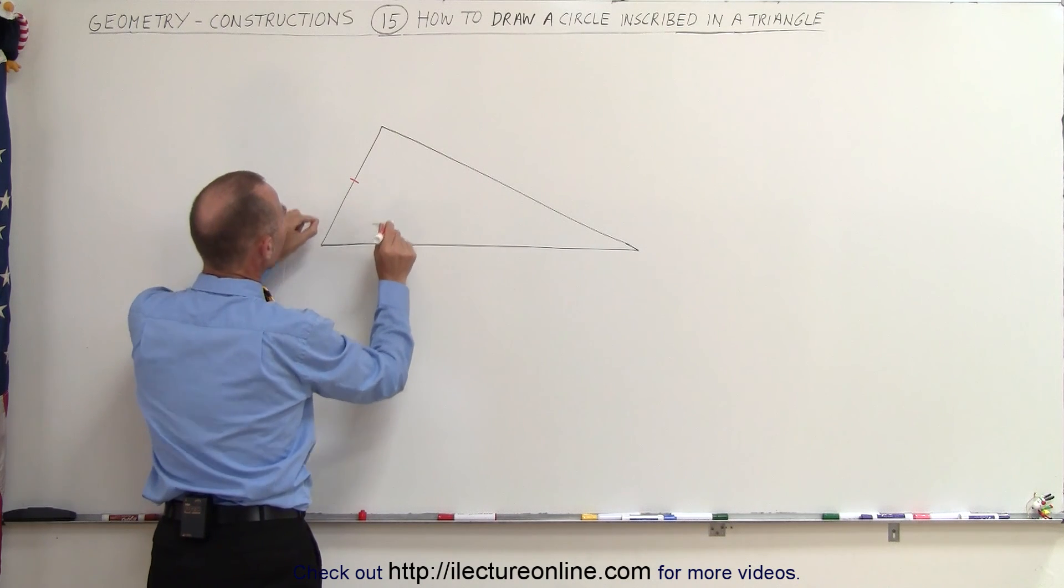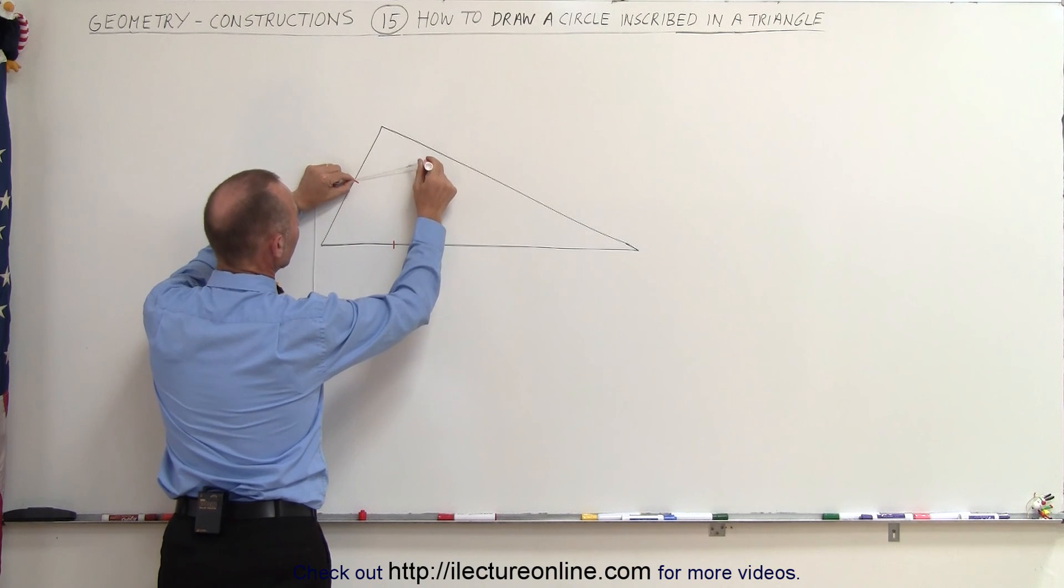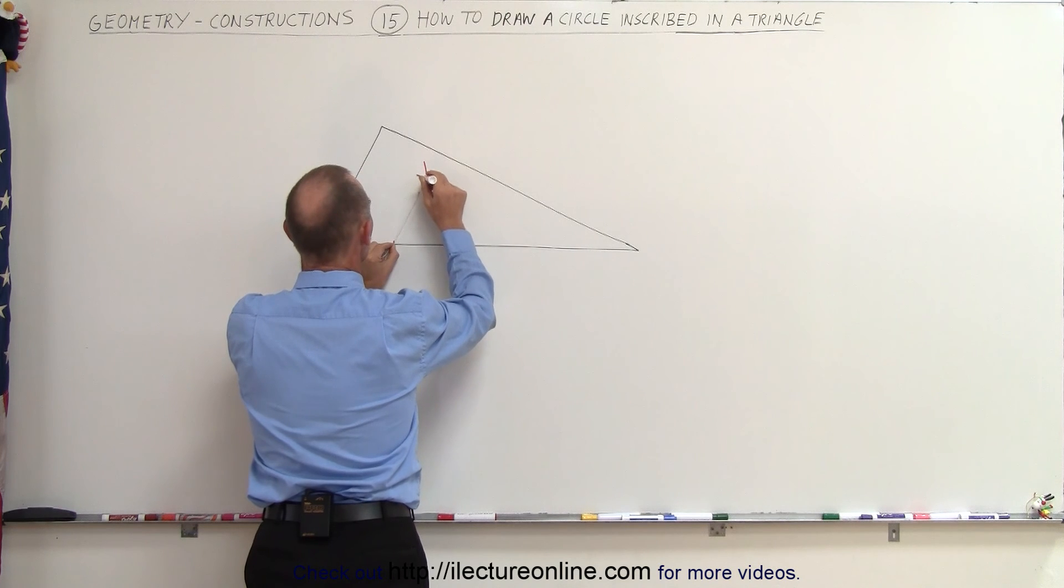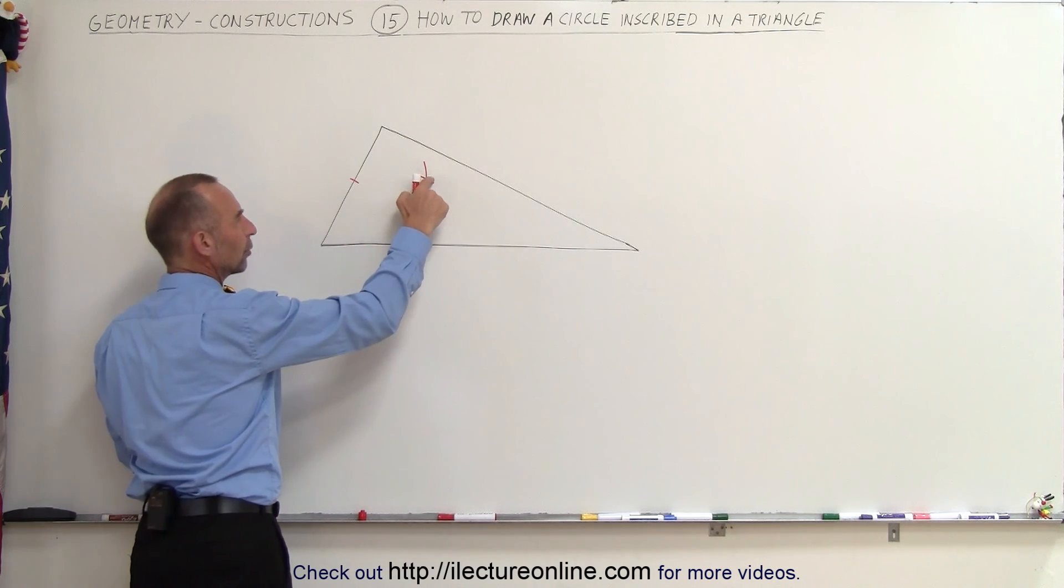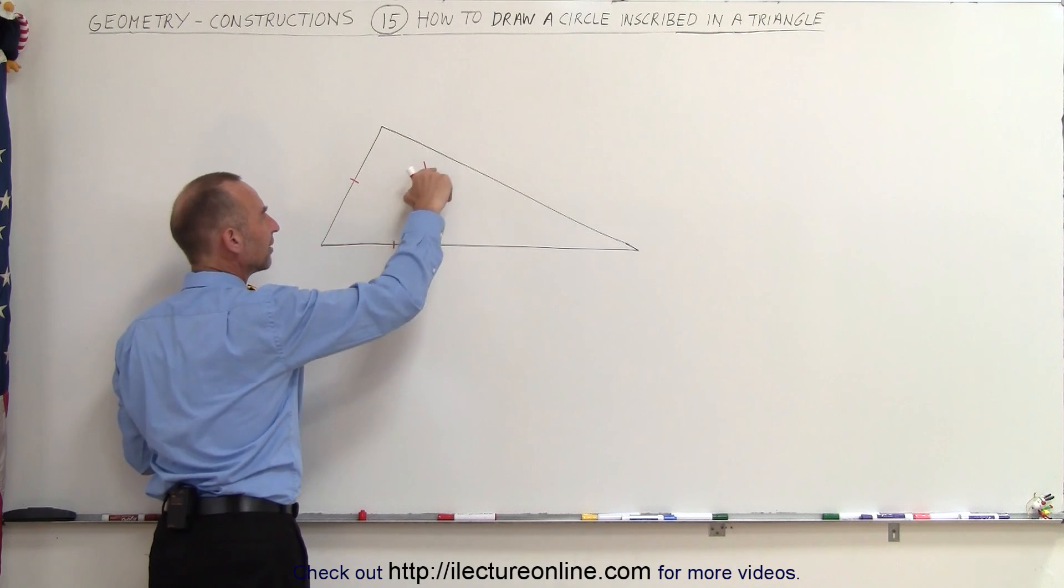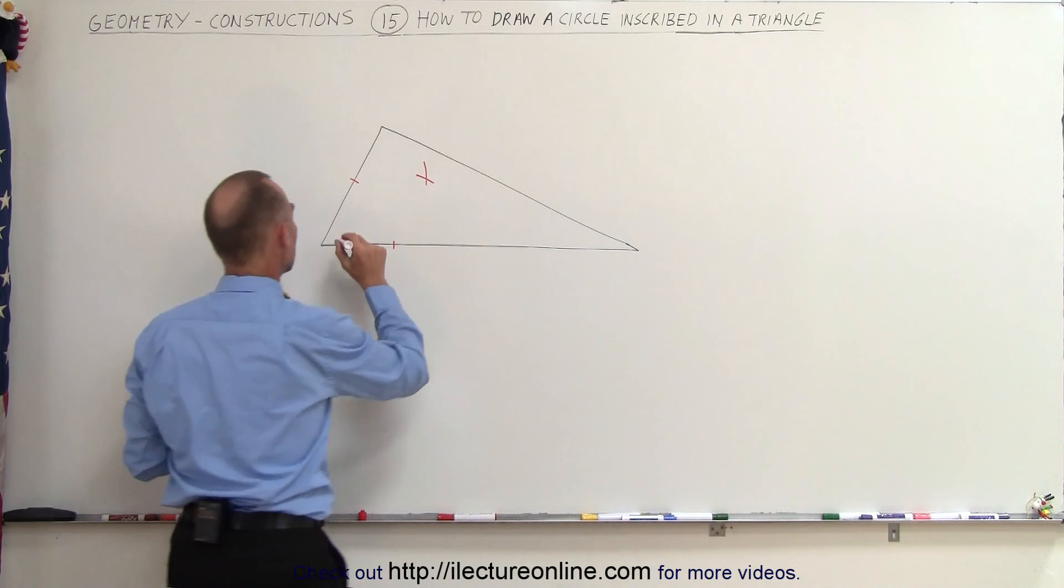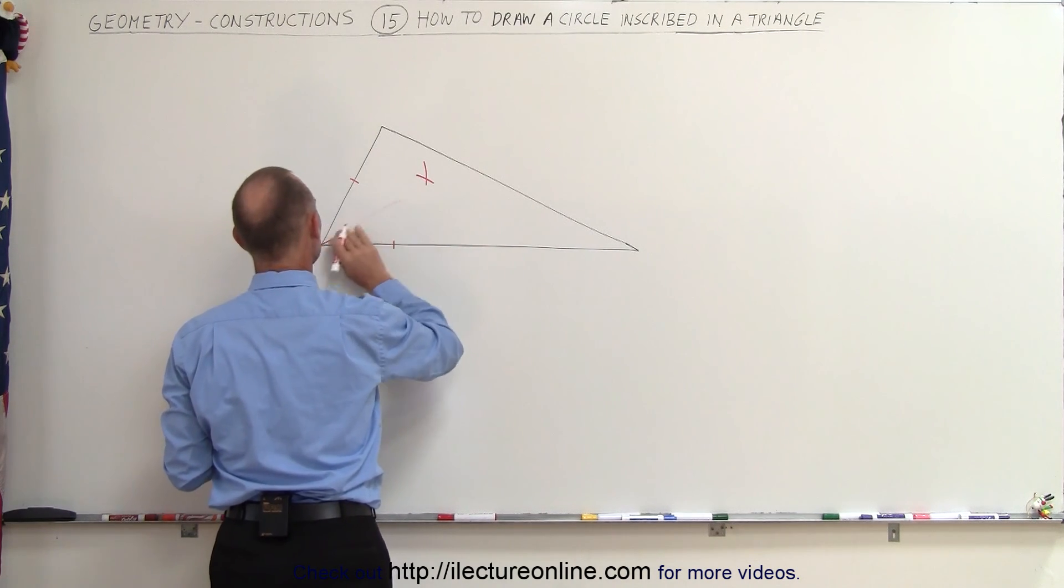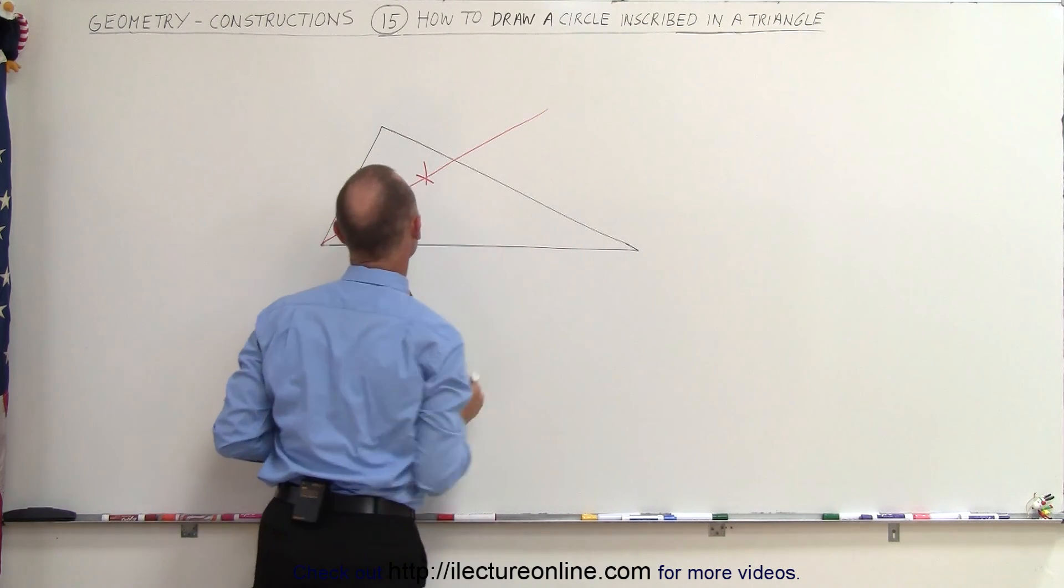So you start on one of the corners, then you move over to this where they cross, you make another little tick mark this way, and then you come over here, make another little tick mark right there. So what you can do now is draw a line from this corner to where those two meet, and that line will exactly divide this angle into two equal angles. So we can do that like this. Let me try that again. Okay, there we go. So this is my first line.